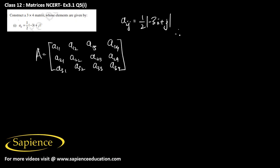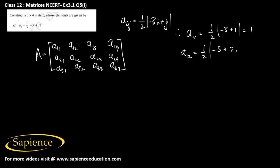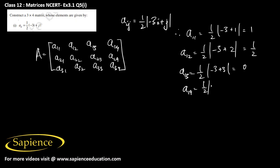Using the formula, a11 will be half of mod of minus 3 plus 1, that is half of 2, which equals 1. a12 will be half of mod of minus 3 plus 2, which equals 1/2. a13 will be half of mod of minus 3 plus 3, which equals 0. a14 will be half of mod of minus 3 plus 4, which equals 1/2.